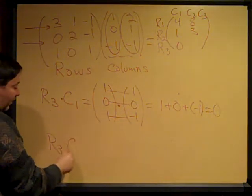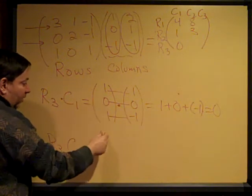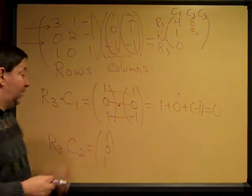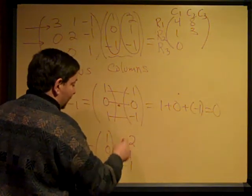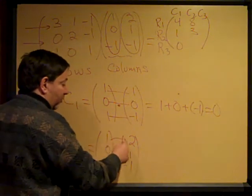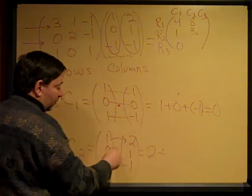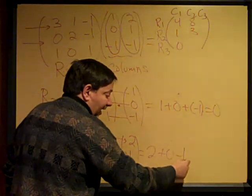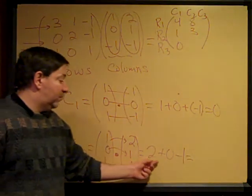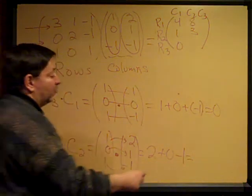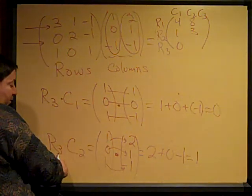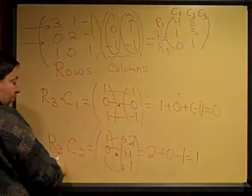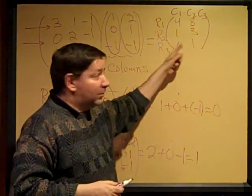Now I do row 3 with column 2. Row 3 is 1, 0, 1 dotted with column 2 which is 2, 1, negative 1. Looks like I'm going to get 1 this time: 2 plus 0 times 1 is 0, plus 1 times negative 1 is negative 1. Adding negative 1 is the same as taking away 1 — 2 plus 0 minus 1 is 1. So the entry in the 3rd row, 2nd column position will be 1. 3rd row, 2nd column. This is absolutely right.